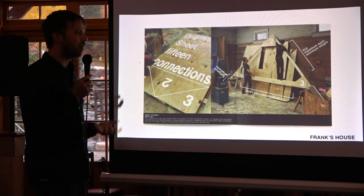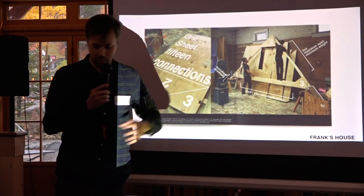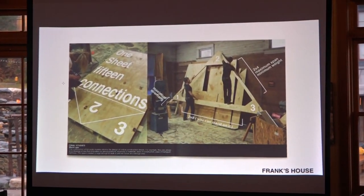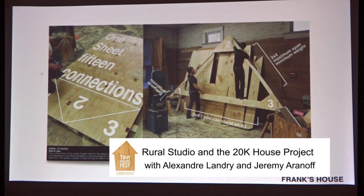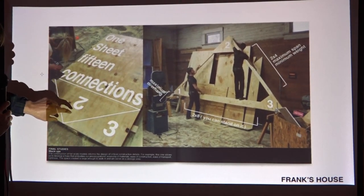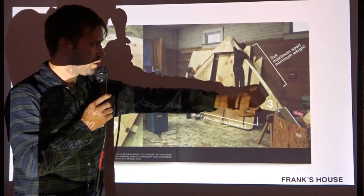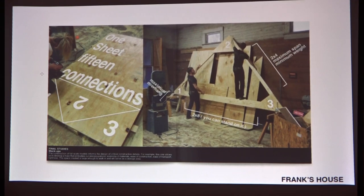There was a lot of research and development in this project. This slide is about optimization of material — we spent a year designing and building a 400 square foot house, getting into every detail. For example, the design of the truss: with one sheet we could do 15 connections for the whole building. This was the maximum span for the minimum weight — that's a two-by-four. We took a lot of time designing this truss, but it was replicated in many subsequent projects.